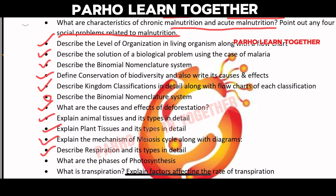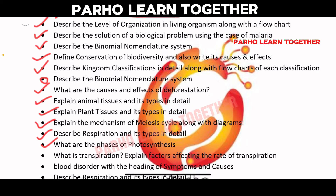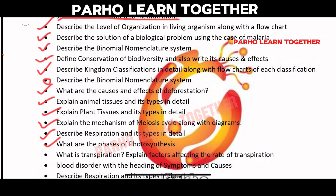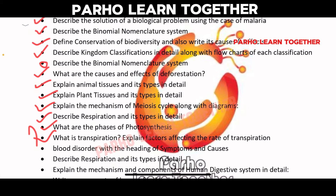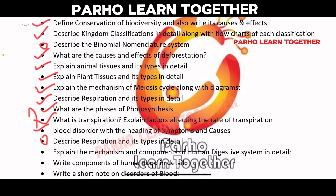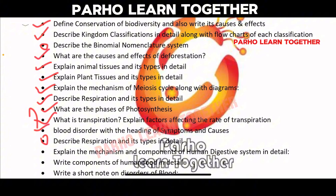Explain animal tissue and its types in detail. Explain plant tissue and its types in detail. Explain the mechanism of the mitosis cycle along with a diagram. Describe the respiration and its types. What are the phases of photosynthesis? Explain transpiration and the factors affecting the rate of transpiration — most important.